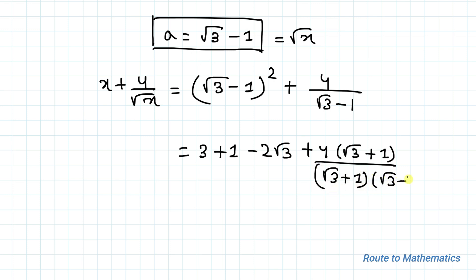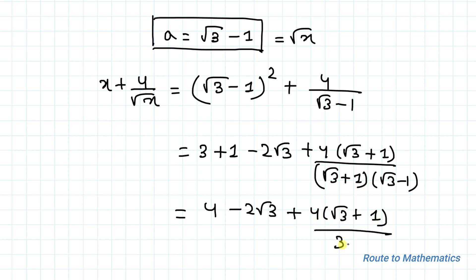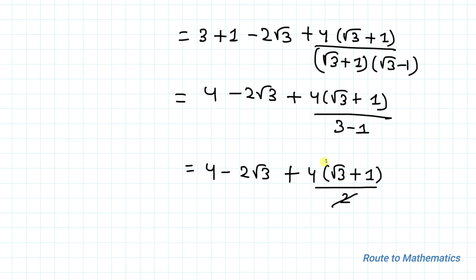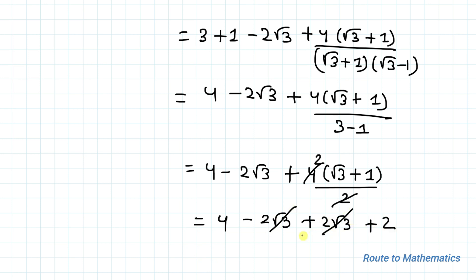To rationalize, I multiply numerator and denominator of the fraction by (root 3 plus 1). So we get 4 minus 2 root 3 plus 4 times (root 3 plus 1) divided by (3 minus 1). This equals 4 minus 2 root 3 plus 4 root 3 plus 4, all divided by 2. Simplifying: the 2 root 3 terms cancel, and we get (4 plus 4) divided by 2 plus the integer part, giving 4 plus 2 equals 6 as our answer.